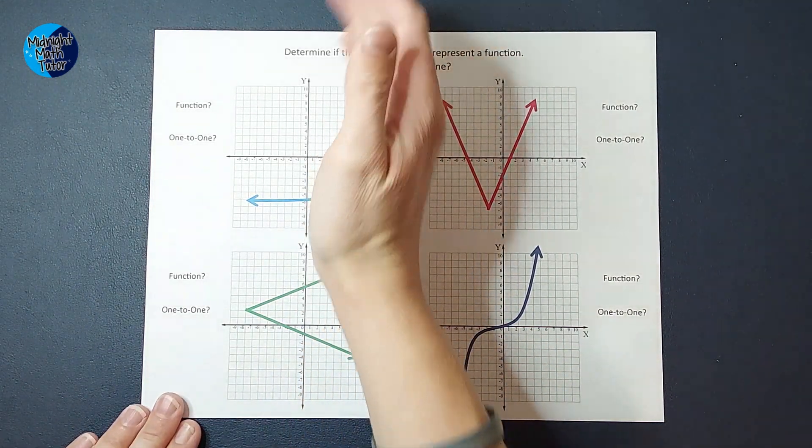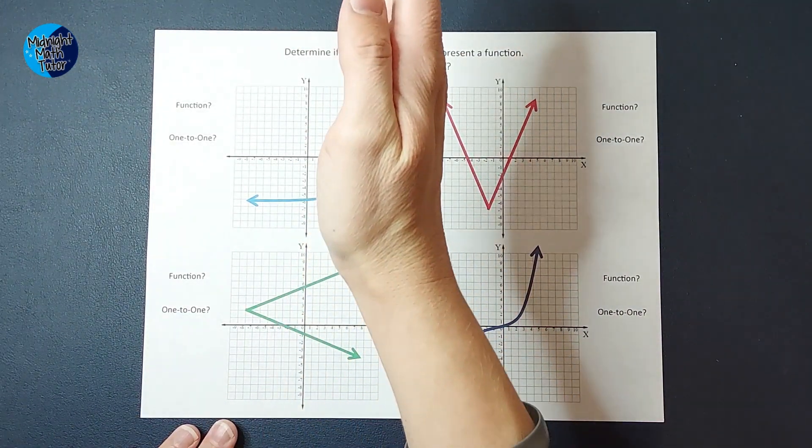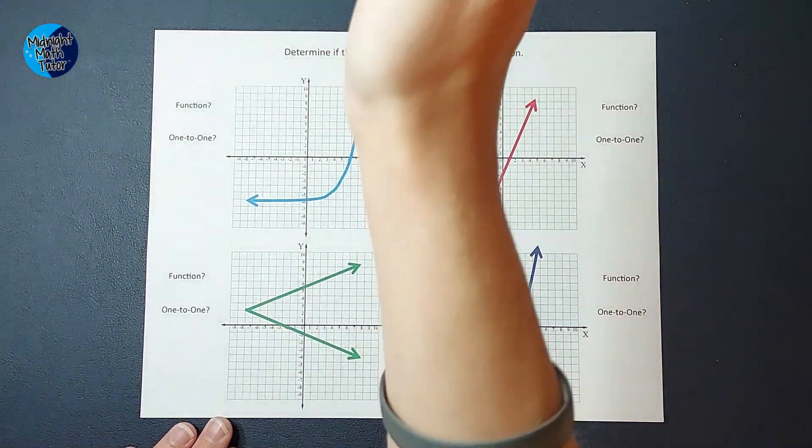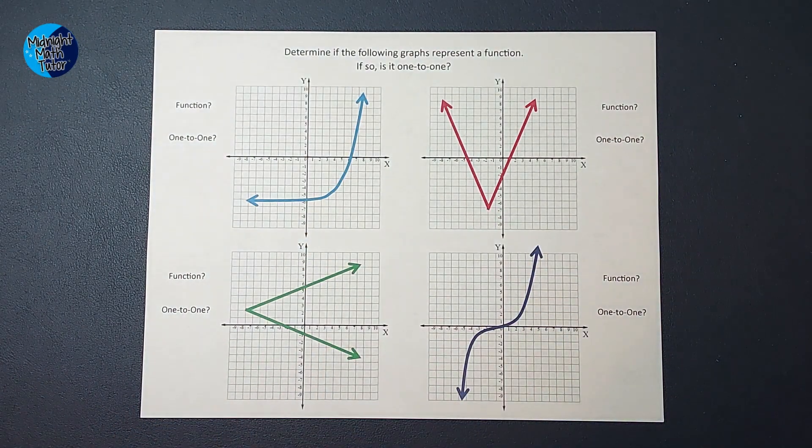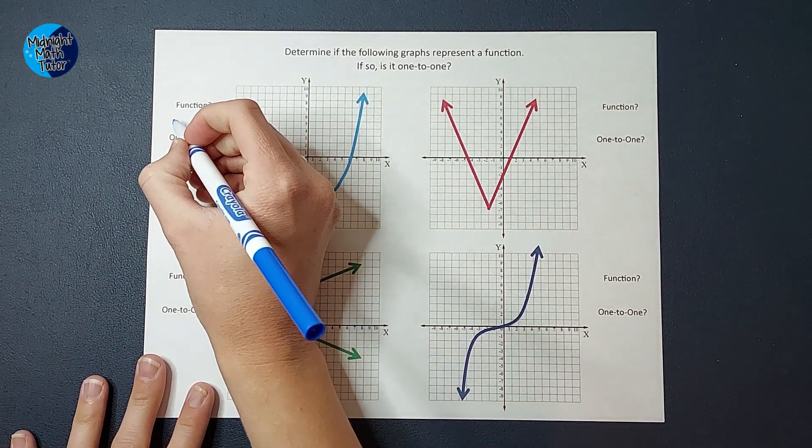Now you might be saying, oh, did it hit more than one there? But even though that looks vertical, it's actually slightly to the right, so it will not hit two points at the same time. So is this a function? Yes, it is.